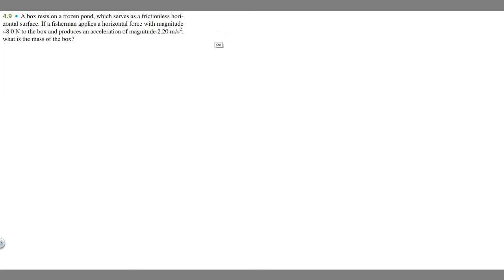So let's go ahead and draw what's going on. We're told we have this box here, and it's going to be resting on this pond. We know a fisherman is going to apply a horizontal force with a magnitude of 48 newtons, so we have this force being exerted on the box.